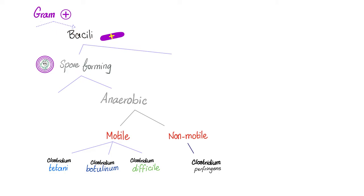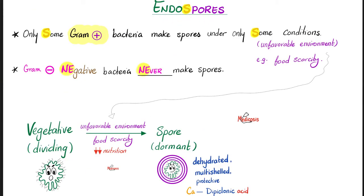Again, Clostridia are gram-positive rods, spore-forming, anaerobic, mostly motile, one is immotile. Clostridia are spore-forming organisms because making spores is a characteristic of some gram-positive bacteria under certain circumstances. When the circumstances become unfavorable, these bacteria will make a spore to protect themselves. When conditions go back to being favorable, the spore disappears and the bacteria return to the vegetative, dividing, replicating state.